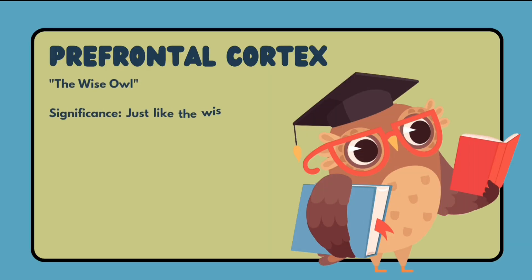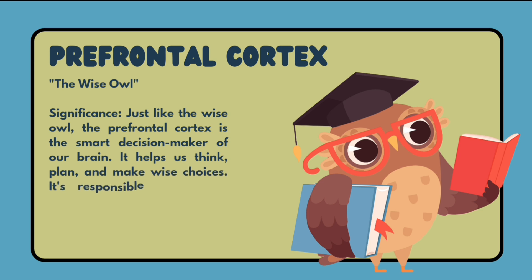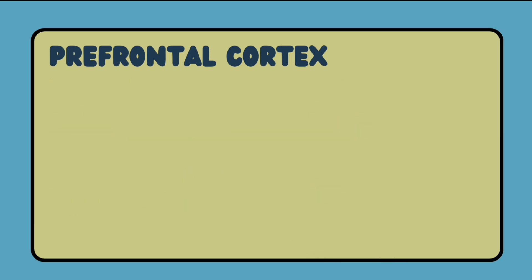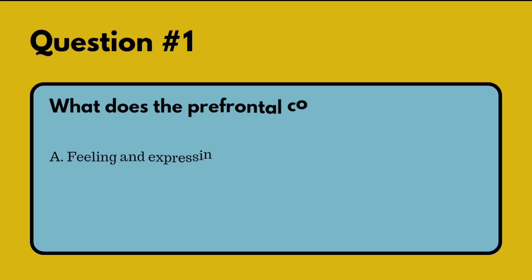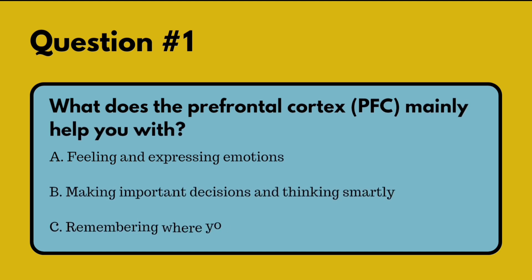The prefrontal cortex — the wise owl. Just like a wise owl, the prefrontal cortex is the smart decision-maker of our brain. It helps us to think, plan, and make wise choices. It is responsible for higher-order cognitive functions, like an owl's sharp intellect.